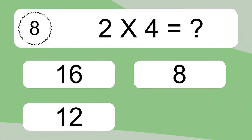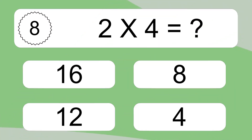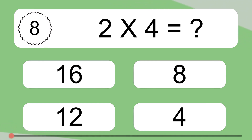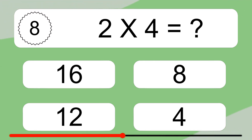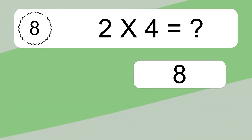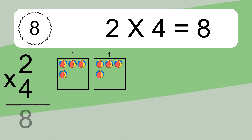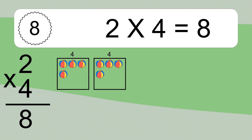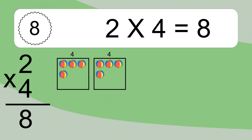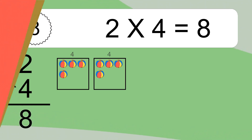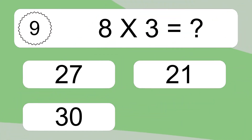2 times 4 equals what? 2 times 4 equals 8. We have 2 boxes, and each box has 4 colorful balls inside. If you count all the balls in all the boxes together, you will have 2 times 4 balls. This equals 8 balls.